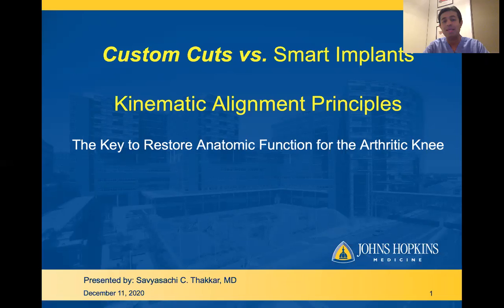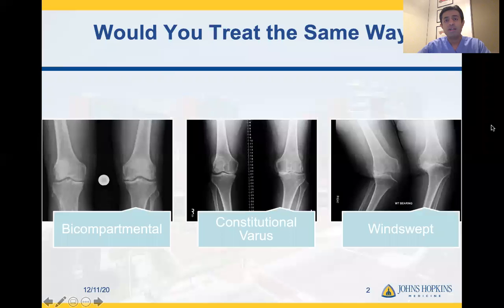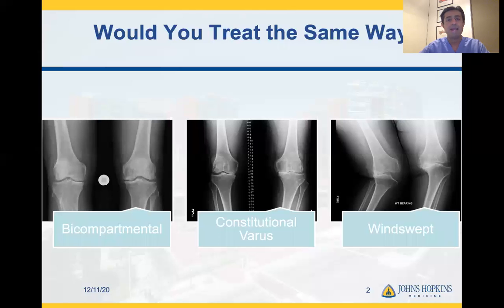Which one of these is the key to restore anatomic function for the arthritic knee? The question I'd like to ask my peers in the audience is: would you treat these three patients the same way? On the left is a patient with bicompartmental arthritis in the medial and patellofemoral compartments. In the middle is an athletic patient with tricompartmental arthritis that has some degree of constitutional varus. And finally, on the end is a patient with a windswept deformity with a valgus on the right and a varus knee on the left.